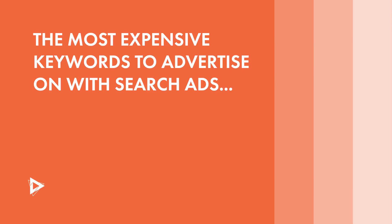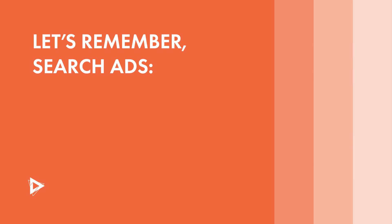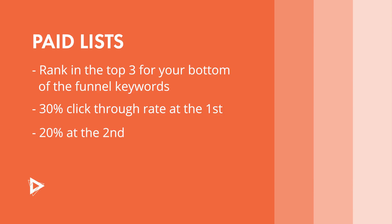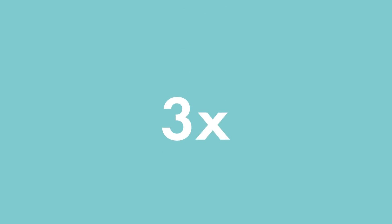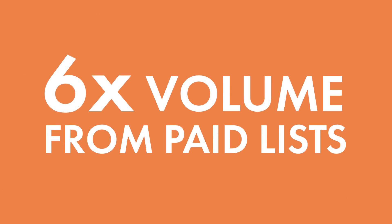These keywords — 'best ERP software' or 'ERP software reviews' — are simultaneously some of the most expensive keywords to advertise on with search ads because they're at the very bottom of the funnel and express buyer intent. Search ads have a higher cost per click and average a 2% to 5% click-through rate. Comparably, paid lists that rank in the top three for your bottom of funnel keywords generate around a 30% click-through rate at position one, around 20-something at position two, and 15% or so at position three. In other words, you can 3x, 4x, or even 6x your volume of people going to your landing page from paid lists compared to search ads.